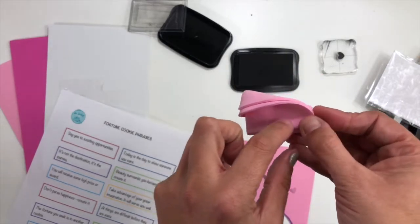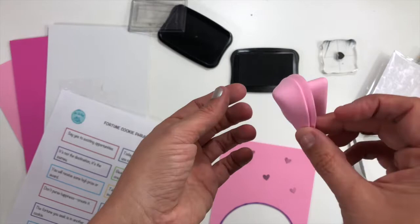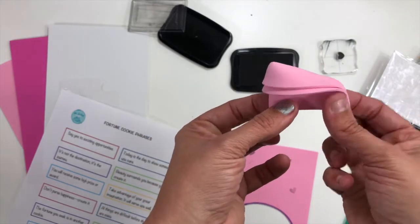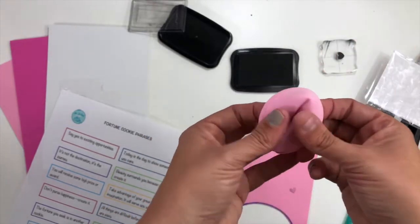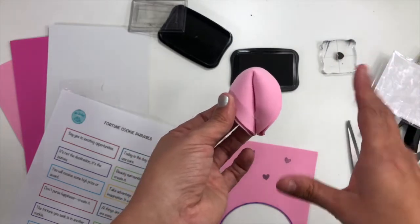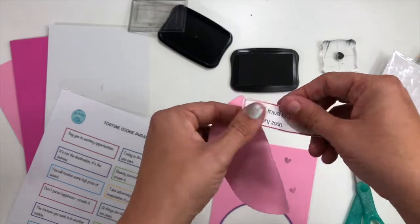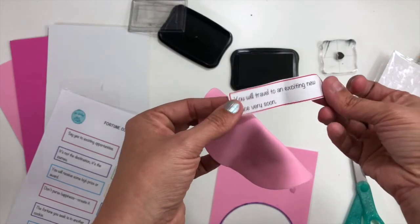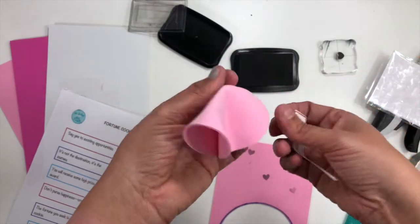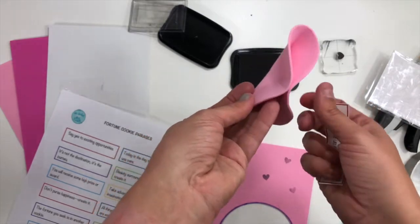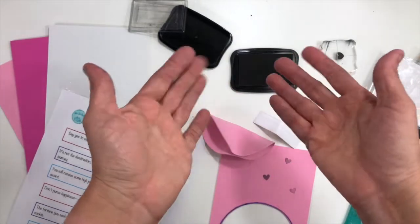You could also do like an XOXO, you could do the word love, any kind of stamp that you have around. Give this to your kids, give them the circles, let them stamp to their hearts content, and then you will have a fortune cookie to open up and get your fortune. I hope you enjoyed something just a little bit different and I'll see you again soon. Bye everybody!